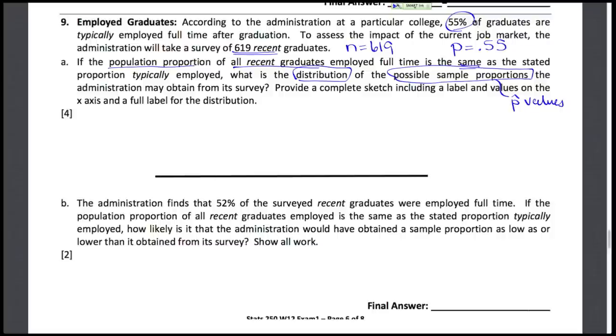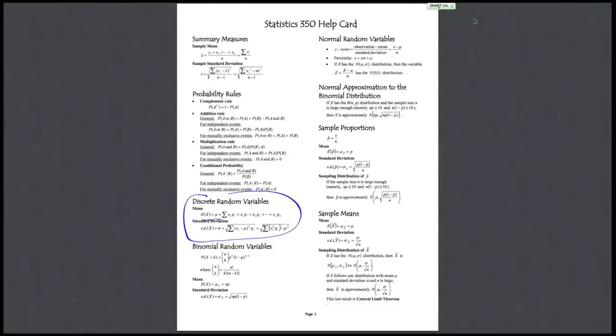Give us a sketch of that distribution for the values for the possible sample proportions. So I'm going to take a quick look at my formula card. I'm dealing with sample proportions. And down here I've got a summary of what the distribution for the possible values of p-hat could be as long as my sample size n is large enough, which I do have here. That model that we would expect for sample proportions is a normal distribution, approximately, with that mean and standard deviation as stated. So I need to use that.